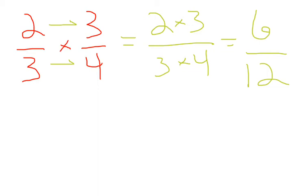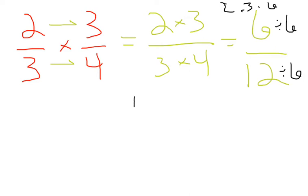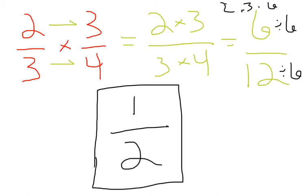Now I need to do that all-important step of checking to make sure that my answer is in simplest form and that it's all the way reduced. I have 6 over 12, and they actually have quite a few common factors — I could use 2, 3, or even 6. I want to use the greatest common factor, so I'm going to divide by 6. Whatever we divide the numerator by, we have to do the same to the denominator. 6 divided by 6 is 1, and 12 divided by 6 is 2. I get 1 half, which is in simplest form.